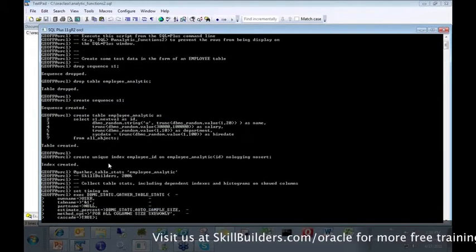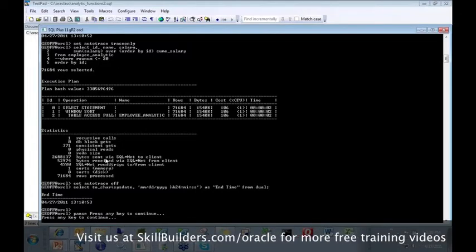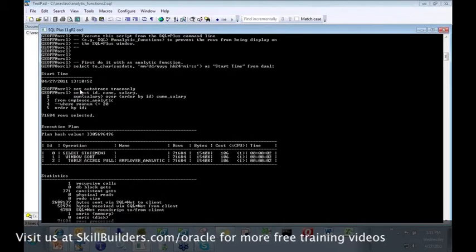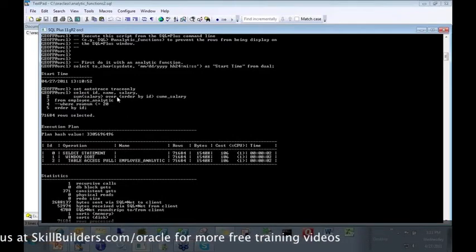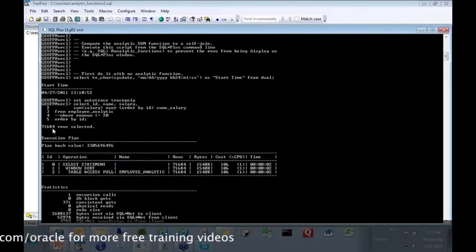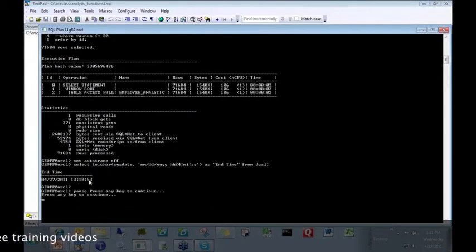And once we have that table, we can then run both queries. So here's the first one. Ran the first query, and it does a pause, and it waits. So let's look at the first query. The first query does a select with a sum of salary over order by ID. Okay? We're doing it for all rows, and we have almost 72,000 rows that were selected. It started at 13:10:52, it ran, and it ended at 13:10:53, a second, one second to do that. Okay?